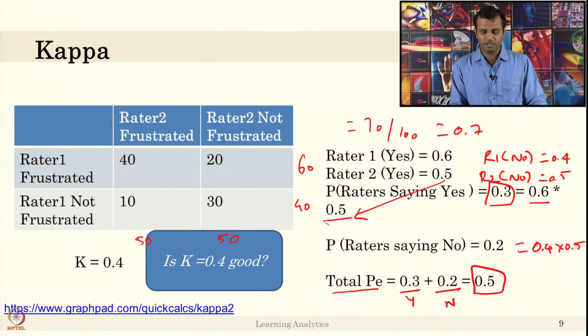How do you compute kappa? Do you need to do it every time like this? There is a simple website which uses a 2 cross 2 table, confusion table. Just enter the values in the table and say calculate, it will calculate and give the kappa score. This is the website.